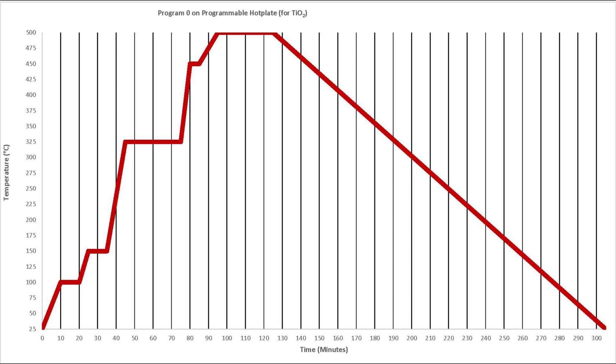Ramp to 100 degrees C for 10 minutes, soak for 10 minutes. Ramp to 150 C for 5 minutes, soak for 10 minutes. Ramp to 325 C for 10 minutes, soak for 30 minutes. Ramp to 450 C for 5 minutes, soak for 5 minutes. Ramp to 500 C for 10 minutes, soak for 30 minutes. Cool for 3 hours.